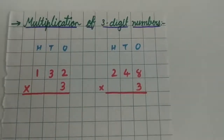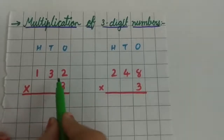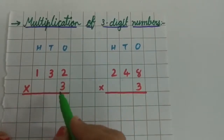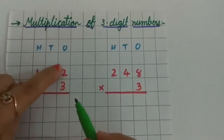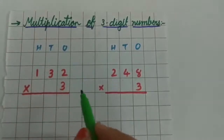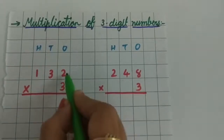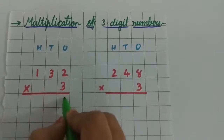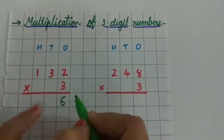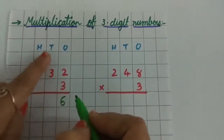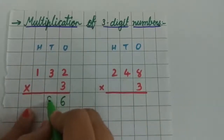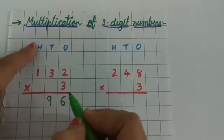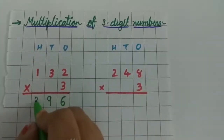Multiplication of 3-digit numbers. 132 multiply by 3. So first you have to multiply by 1's, then 10's, and then 100's. 3 twos are 6, write 6 below the 1's place column. 3 threes are 9, write 9 below the 10's place column. 3 ones are 3, write 3 below the 100's place column.